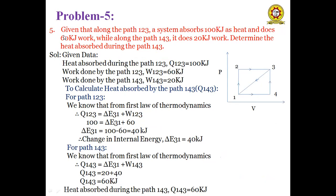Next problem: Along path 1-2-3, a system absorbs 100 kJ as heat and does 60 kJ of work. Along path 1-4-3, it does 20 kJ of work. Determine the heat absorbed during path 1-4-3. On a pressure-volume graph, there are two paths: path 1-2-3 and path 1-4-3.